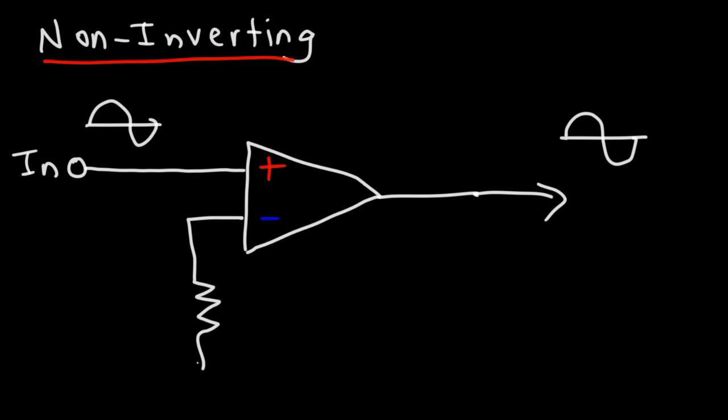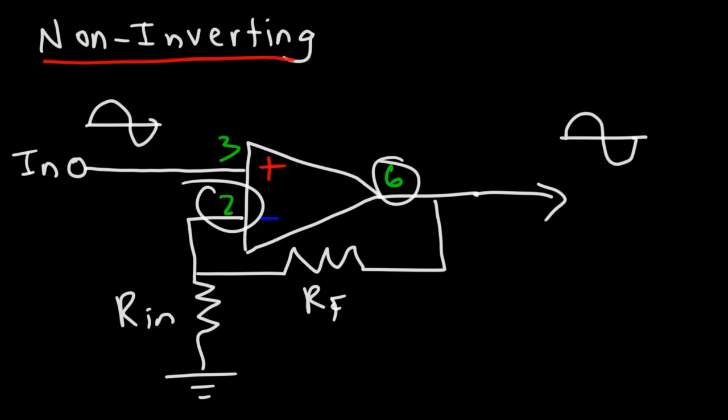Now we're going to have a resistor between pin two, that is the inverted input, and the ground. So let's call that the input resistance. And we're still going to have our feedback resistor between inputs two and six. So notice that if you compare this circuit with the inverted amplifier circuit, the feedback resistor was still between pins six and two. So that hasn't changed.